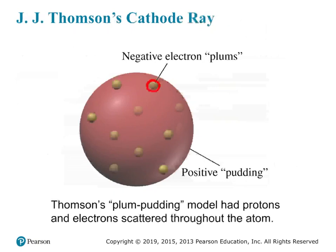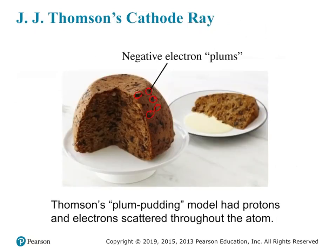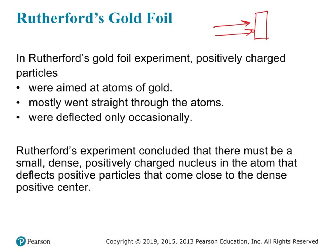In Rutherford's gold foil experiment, positively charged particles were aimed at a thin piece of gold. The thought was that if we had two atoms with this type of pudding, they would just pass right through each other. And those positively charged particles mostly did pass straight through.